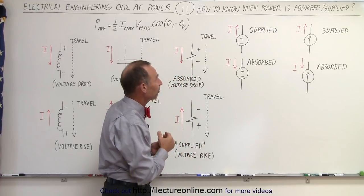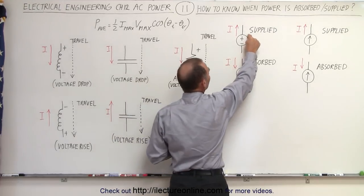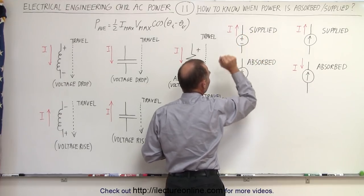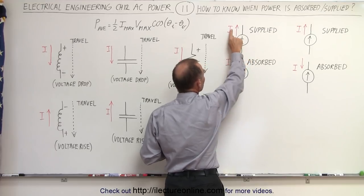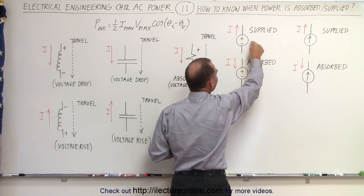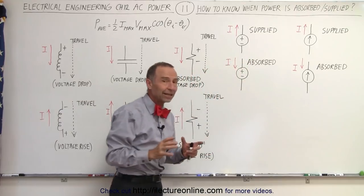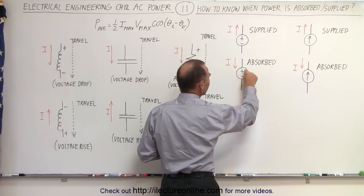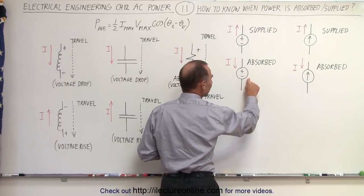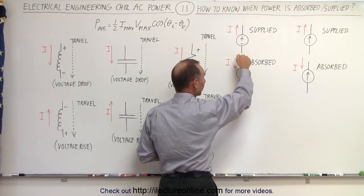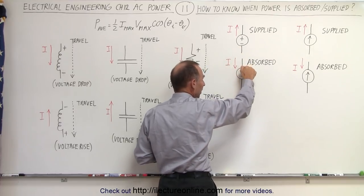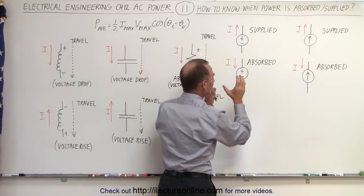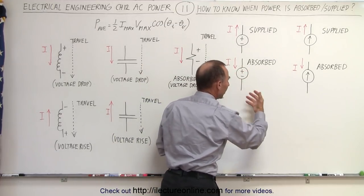A similar thing happens with the voltage supply. If we have the positive on this side and the negative on this side, and the current inside the mesh where the power supply is located is in the same direction as from the negative to the positive inside the power supply, then we can say that the power supply supplies power. But if the polarity is such that the current in the mesh flows from the positive to the negative terminal of the power supply, then the power supply actually absorbs power — it doesn't supply the power.